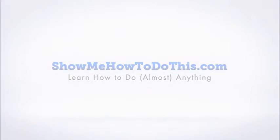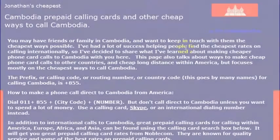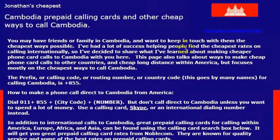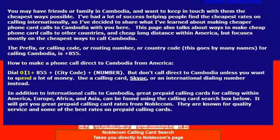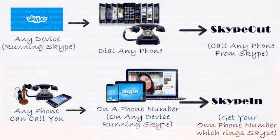If you are looking for an easy way to call Cambodia from the United States, simply dial the international calling code 011, followed by the country code for Cambodia, which is 855. However, I wouldn't really recommend calling direct, as your phone company will charge you a lot of money.